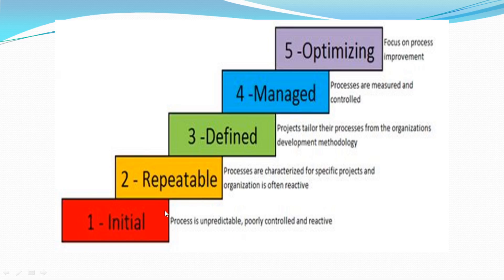There are five levels total in the Capability Maturity Model. Initial: processes are unpredictable, poorly controlled and reactive. Repeatable: processes are characterized for specific projects. Defined: development methodologies are implemented. Managed: processes and standards are followed consistently. Optimized: continuous improvements are made to the process. This is the Capability Maturity Model.